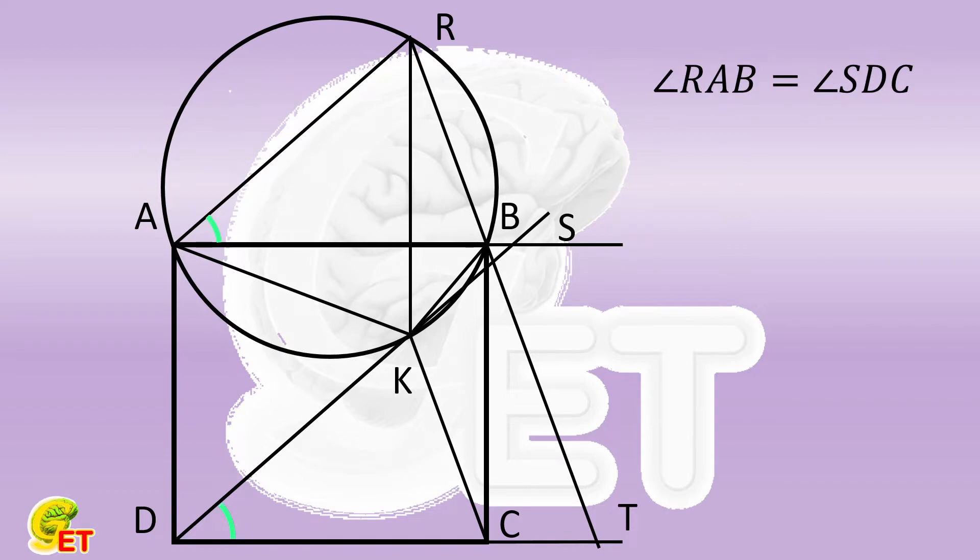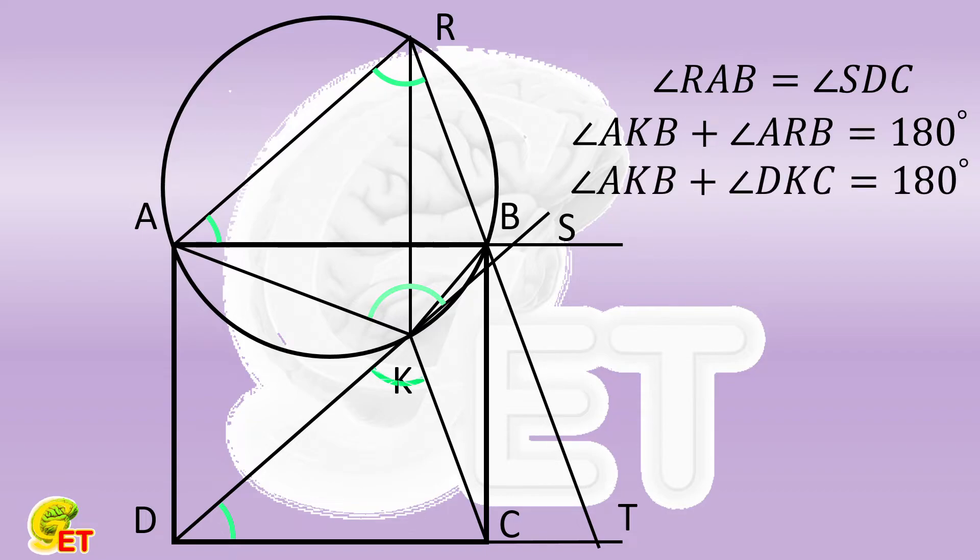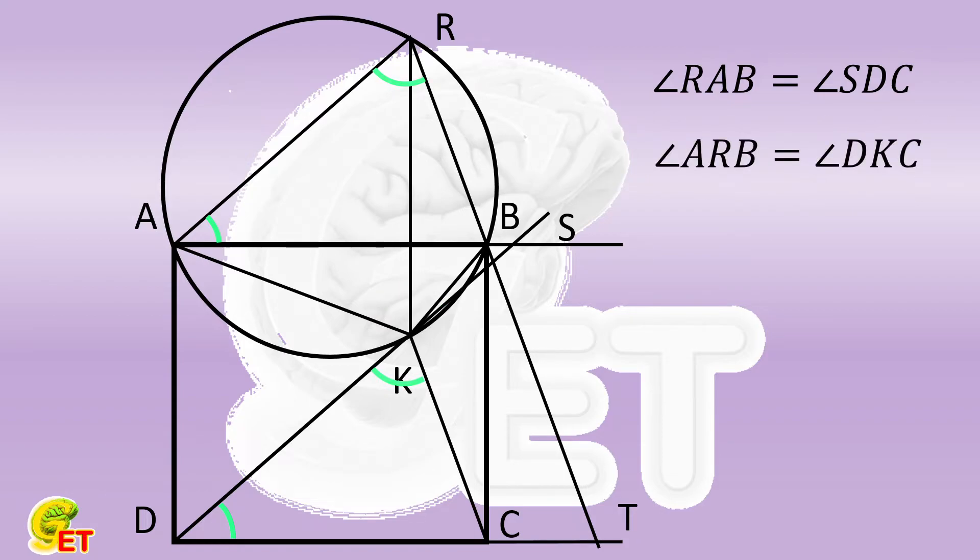AB is a chord on a circle. The sum of the two inscribed angles AKB and ARB which both share it is therefore equal to 180 degrees. Since it is known that angle AKB plus angle DKC is also equal to 180 degrees, angle ARB is equal to angle DKC.